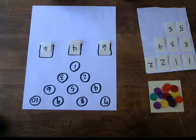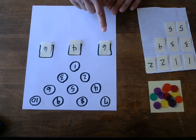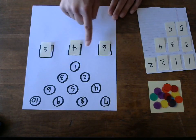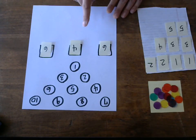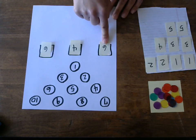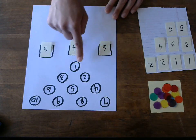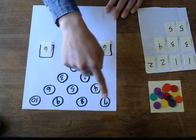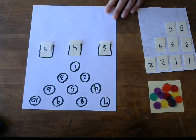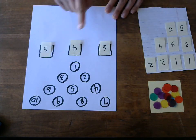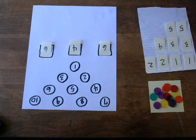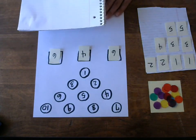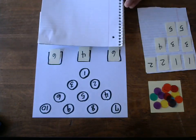All right, so now my job is to write number sentences using only these three numbers. And I am going to try to write number sentences to knock down all of these pins. And if I can do that with these three numbers, then I get a strike. I'm going to pull over my math journal, and I'm going to write my equations in my math journal.